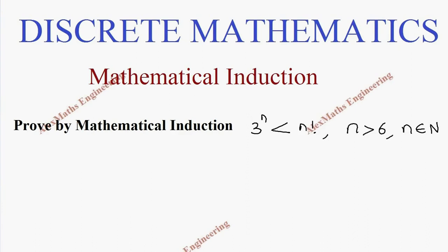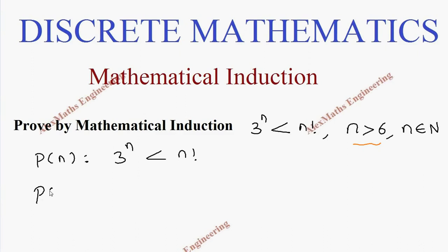Hi students, this is Alex. In this video we are going to prove by mathematical induction that 3 power n is less than n factorial when n is greater than 6 and n belongs to the natural numbers. Let's take P of n as the expression: 3 power n is less than n factorial. Since n is greater than 6, the first value is n equals 7, so we are going to find what P of 7 is for this expression.